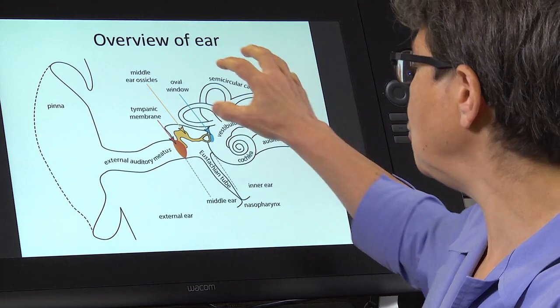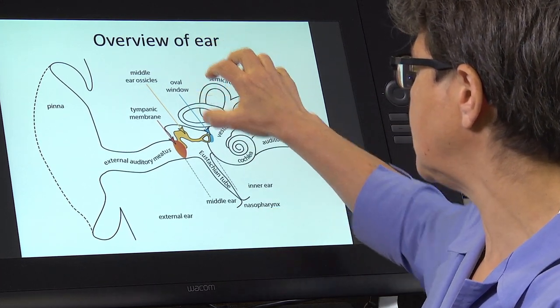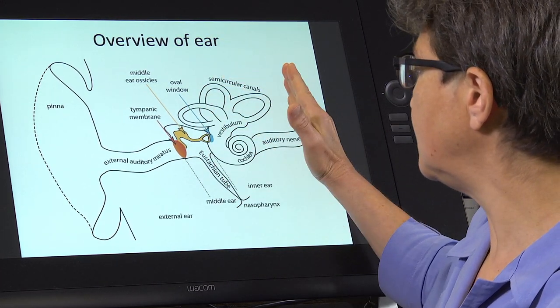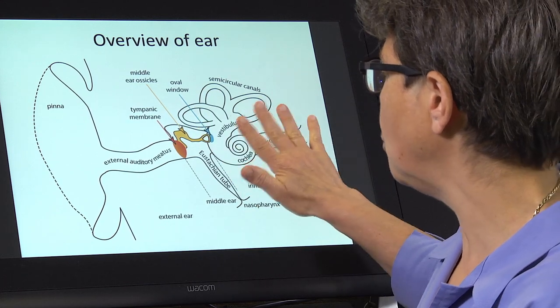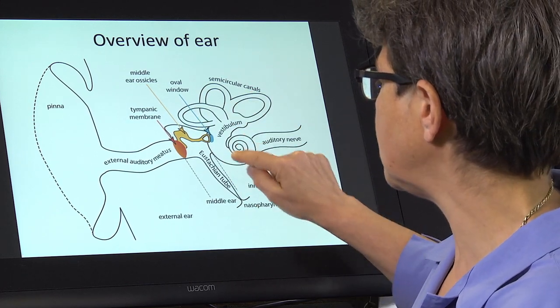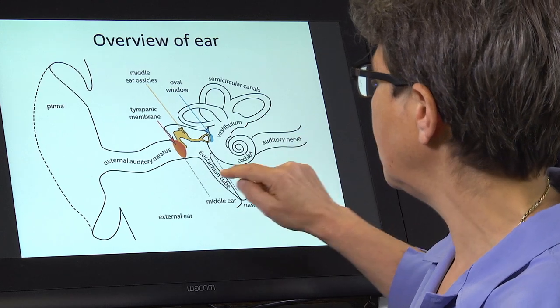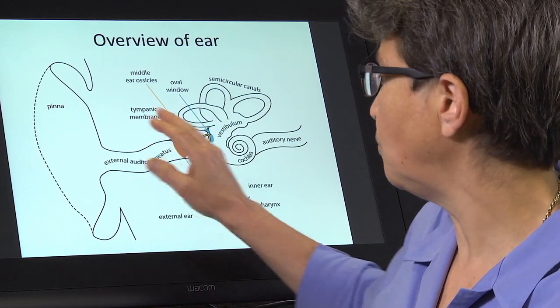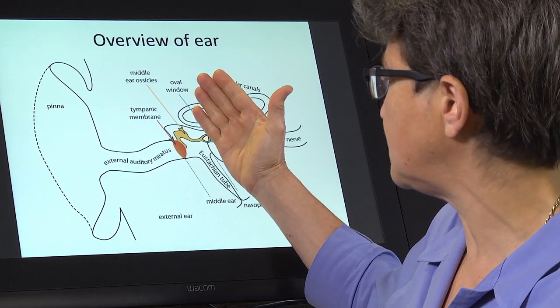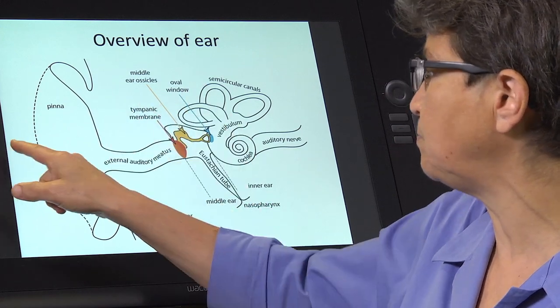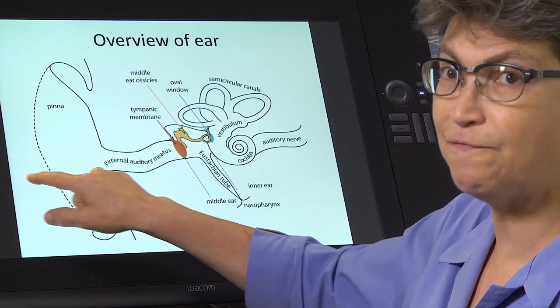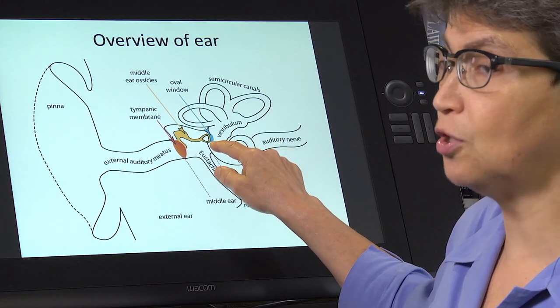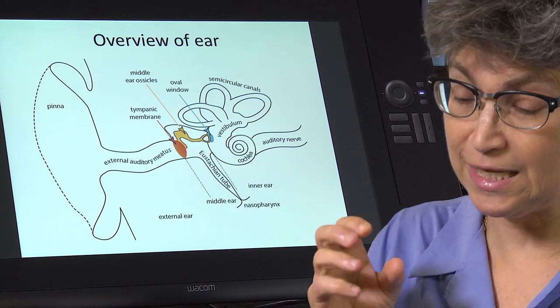So there are two basic parts to this system. There's this sensory neural part where you have the sensory neuron and the neuron, and then there's this external part. And what's the point of this external part? It's simply to get the sound and funnel it in to the oval window.